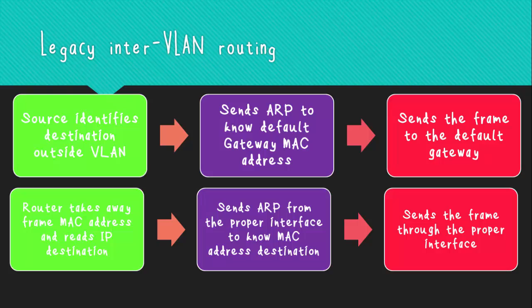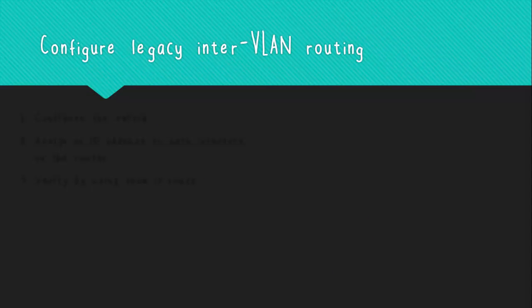When the router gets the frame, it strips the MAC portion of the frame, analyzes the IP address, and places the packet into the proper interface according to its routing table. Finally, the router sends an ARP request from the new physical interface to determine the MAC address of the destination device, and then when the ARP request is answered, it sends the frame to the proper destination.